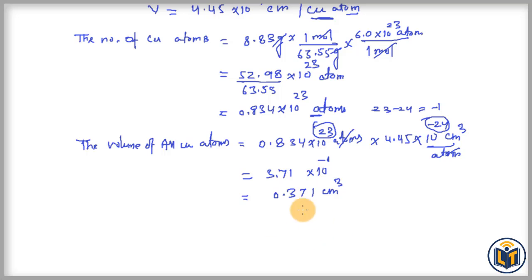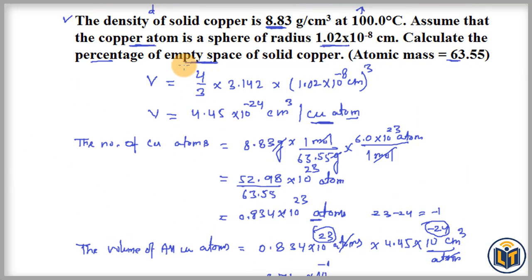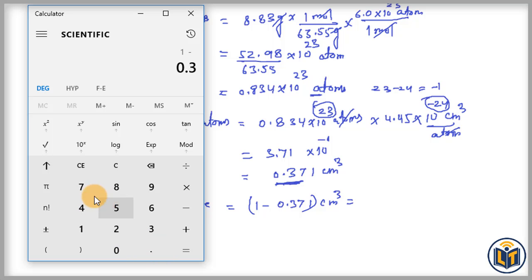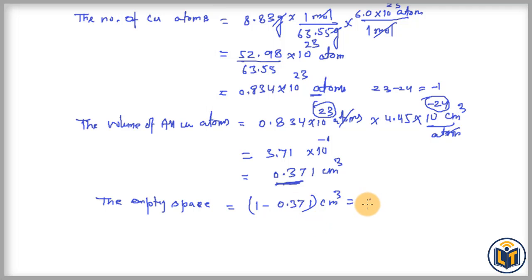Now we calculate the empty space in the substance. The total volume of the substance is 1 centimeter cube. We subtract the volume of all copper atoms from the total volume: empty space = 1 cm³ − 0.371 cm³ = 0.629 centimeters cube. This is the empty space available in the copper solid.